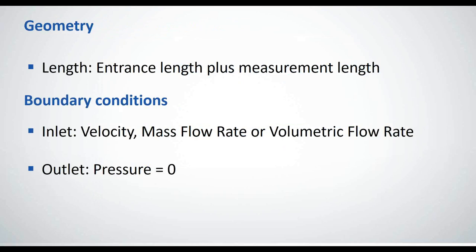And then when we want to start thinking about numerical calculations using a CFD simulation, this is the general setup that we would recommend. So when we're talking about the geometry, the crucial geometry is the length, and you have to make sure that the length of your geometry is at least as big as the entrance length plus the amount of pipe that you want to measure the pressure drop across or over. And we normally recommend these basic boundary conditions using a flow boundary condition at the inlet, either a velocity, mass flow rate, or volumetric flow rate, and simply a pressure equals zero boundary condition at the outlet.